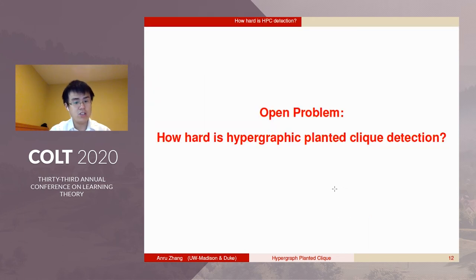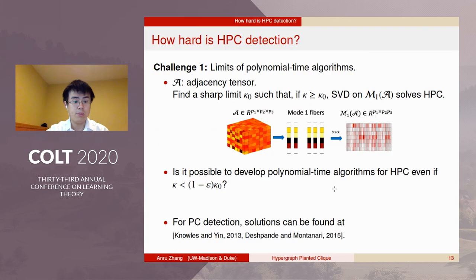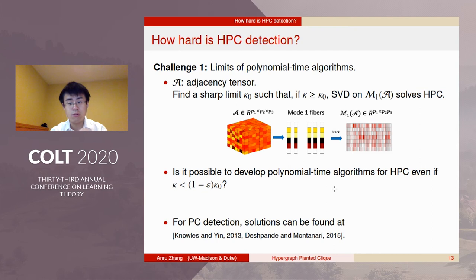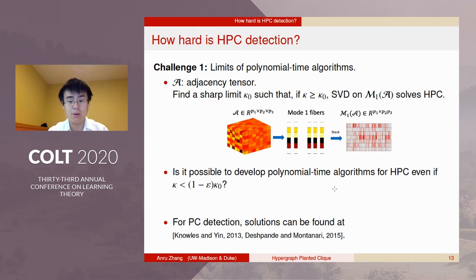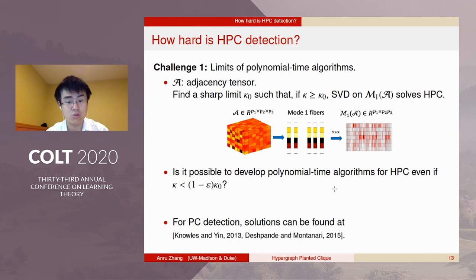We want to know how hard HPC detection is, and we raise the following open problems. First, the order-D hypergraph naturally reduces to an order-D tensor A. One straightforward way to solve HPC is to perform SVD on the matricization or unfolding of A — this method is parallel to the spectral method for vanilla planted clique detection. What is the sharp limit of κ for this polynomial algorithm to work? And is there another polynomial algorithm solving HPC even when κ is below that threshold? Such results have been studied for vanilla PC, but remain unclear for HPC.